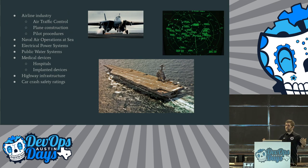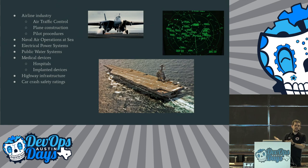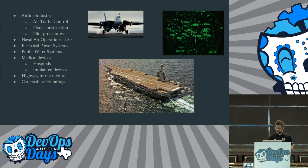Electrical power systems and grids, public water systems, medical devices in hospitals — these are all super critical systems that can't go down. When we talk about our businesses, are they of that level of importance? Maybe, maybe not. But we would like to think that they are, so we can apply practices used in places where it is truly life or death. Highway infrastructure and car crash safety ratings — who wants to make sure their car has been tested for safety before you buy it or put your child in it?